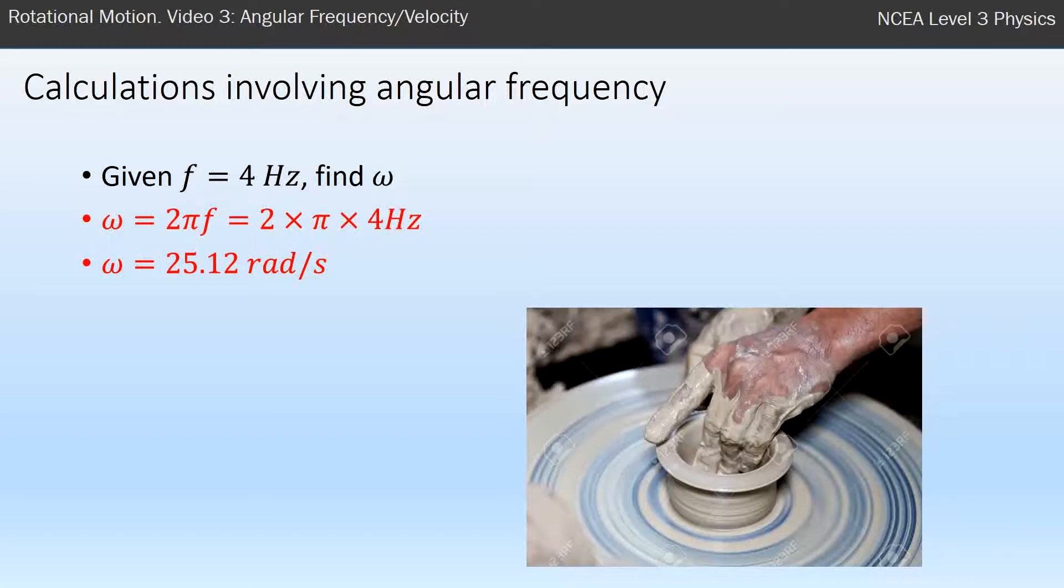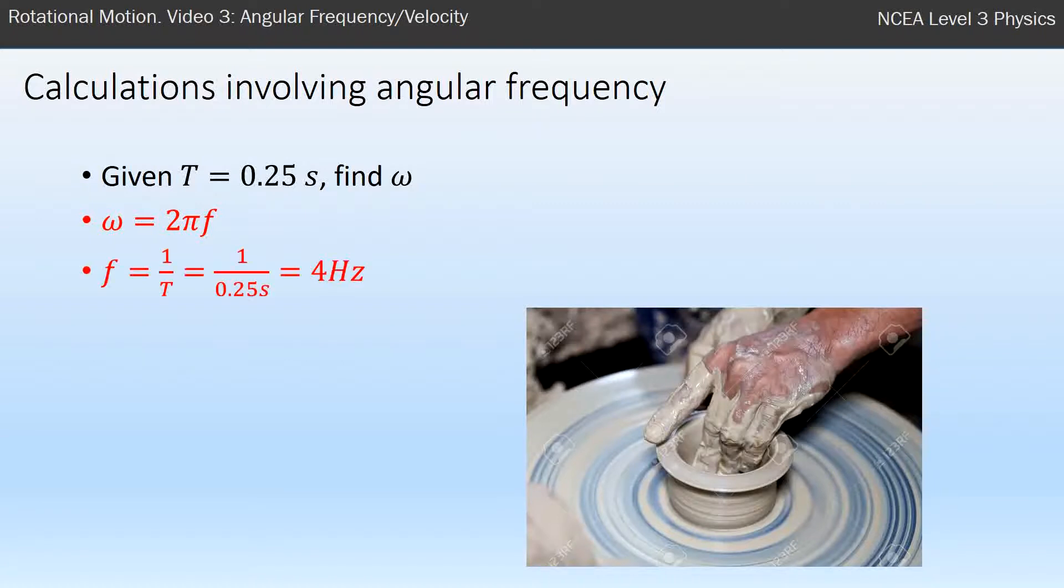But what if you're given something that spins, not with frequency, but with time period? Now you recall that we have a formula to calculate omega, but it has frequency instead of time period. But we have another way of calculating frequency, and that's frequency equals 1 over time period. So we'd use that first to convert the time period into a frequency.